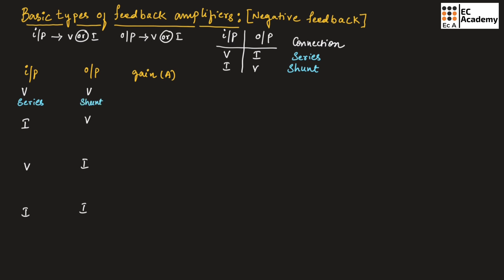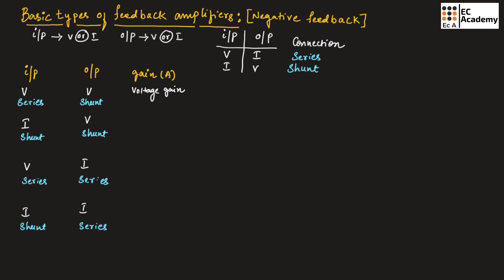If input is current and output is voltage, such connection is known as shunt-shunt connection. If input is voltage and output is current, such type of connection is series connection. And if input is current and output is also current, such type of connection is known as shunt-series connection. If input is voltage and output is voltage, we will get gain as voltage gain, represented as Av = V0 / Vi.